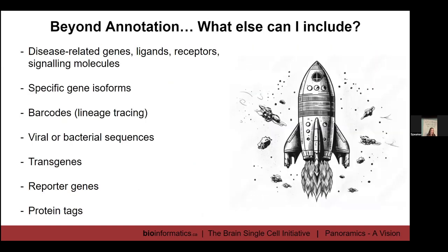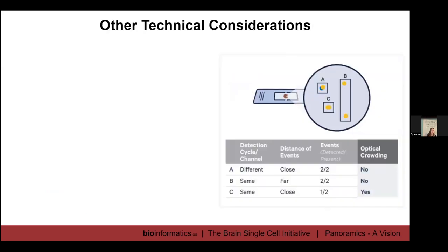Beyond annotation, there are lots of other interesting things you can include: disease-related genes, ligands and receptors for cell-cell interaction analyses, specific isoforms you want to examine, or barcodes for lineage tracing. There's a whole host of different things you can do, and the 10x panel designer will allow you to input those.